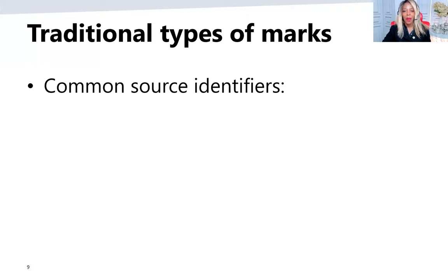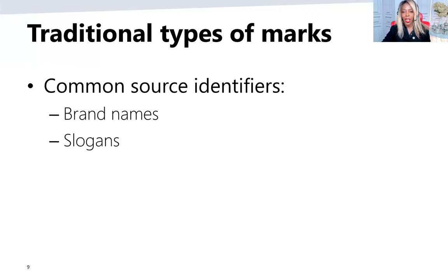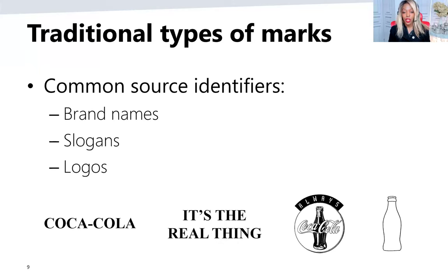Let's talk about traditional trademarks. The common source identifiers for traditional marks are brand names, slogans, and logos. These are some examples of different traditional marks all owned by the same company. Coca-Cola owns the wording 'Coca-Cola' to identify beverages, the slogan 'It's the real thing,' and a logo combining wording and design. Next to it, you see an illustration of the shape of the Coca-Cola bottle, which could be a logo — but what if it's actually the shape of the bottle itself? That moves us into non-traditional types of marks.